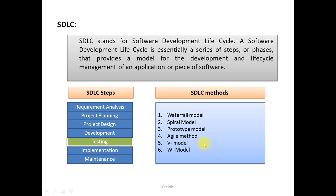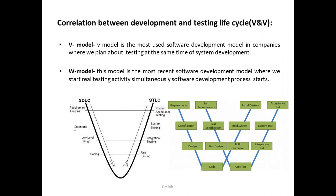The V model is shaped like a 'V', where SDLC phases are placed on one side and the corresponding testing phases on the other side. The requirement flow goes downward on one side, and after the coding part it goes upward on the other side. However, what actually happens in V model is different from a simple sequential flow.